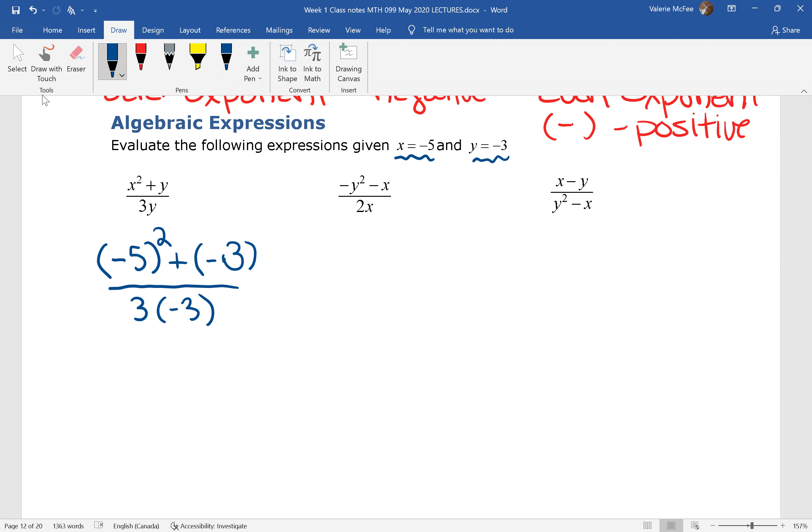Now we're just following order of operations. The order of operations says take care of any exponents. Negative 5 times negative 5. I do want to only have one sign here. The signs are different. And I can simplify this multiplication in the denominator. It's all I have there. Be careful. It's not subtraction.